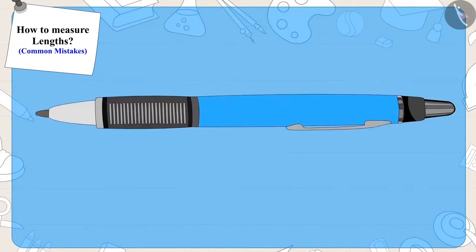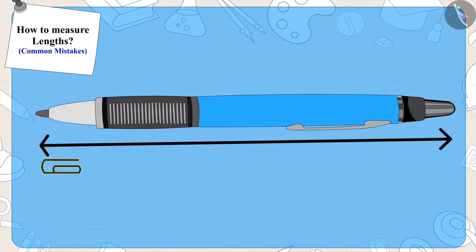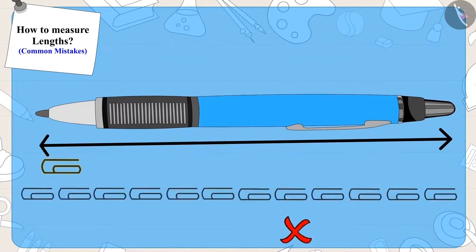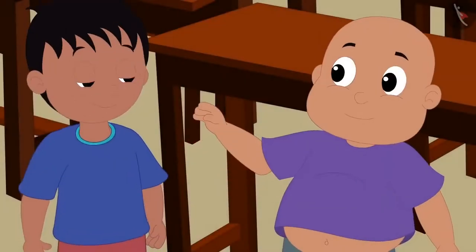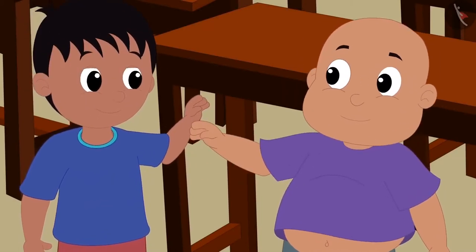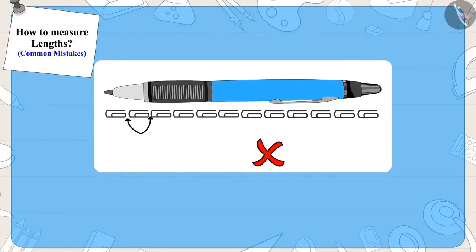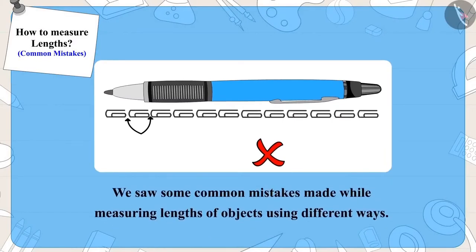Children, remember that whenever we have to measure the length of an object with the help of another object, we should not leave any empty space in between. Raju and Bablu were very happy to learn this from Appu and they became friends again. Children, in this video we saw some common mistakes made while measuring lengths of objects using different ways.